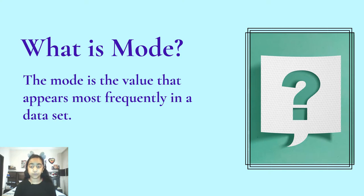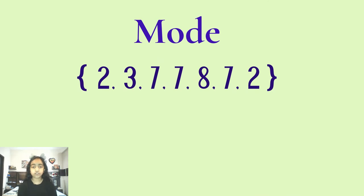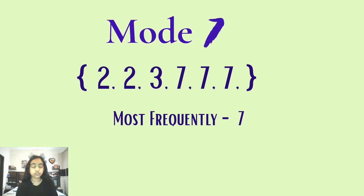So here we have a data set. In order to find the mode, we first need to rearrange this data set in ascending order, like we did with the median. We have now arranged our data set in ascending order, and over here we can see that two is getting repeated twice, three is not getting repeated at all, and seven is getting repeated thrice. So seven is our mode because it is the number which is appearing most frequently in the data set.